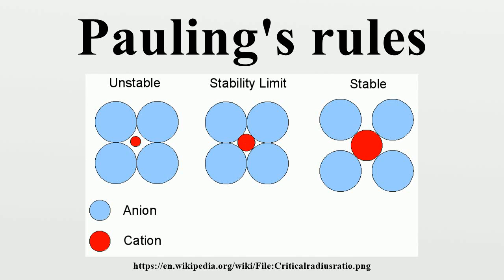This article is about Pauling's rules on crystal structures. For Pauling's rules on oxoacid strengths, see Acid Dissociation Constant. Pauling's rules are five rules published by Linus Pauling in 1929 for predicting and rationalizing the crystal structures of ionic compounds.